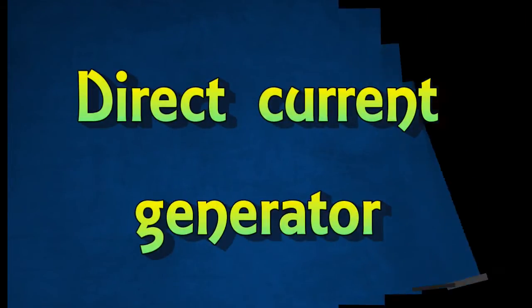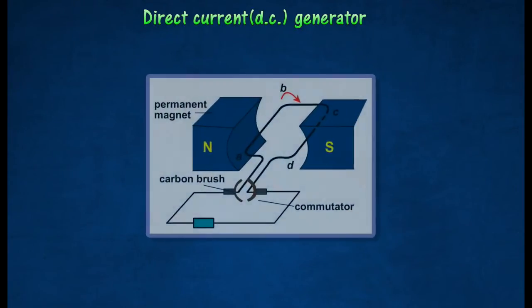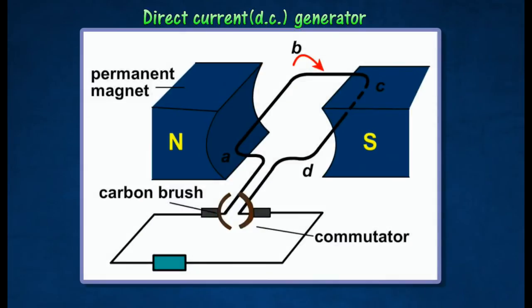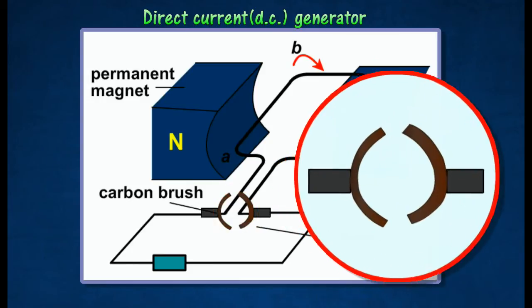Direct Current Generator. A simple direct current generator consists of a rectangular coil of wire mounted on an axle, between the curved poles of a permanent magnet. The split ring commutator reverses the connections of the coil with the external circuit every time the coil passes through the vertical position.